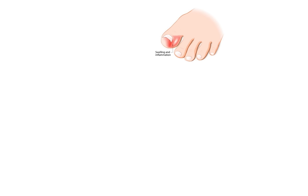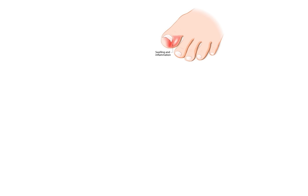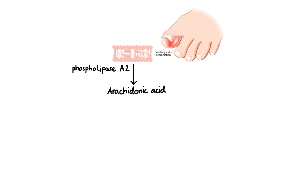Following tissue injury or irritation, an enzyme called phospholipase A2 is released, which converts phospholipids in the cell membrane into arachidonic acid. Arachidonic acid is the substrate for two major enzymes: the cyclooxygenase, abbreviated as COX, and 5-lipoxygenase, abbreviated as 5-LOX.